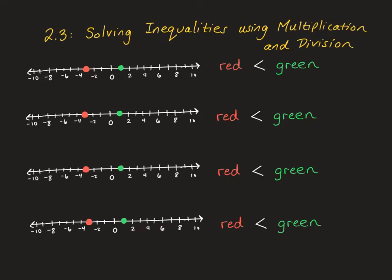On the very first number line, I'm going to add 3 to both sides. Let's see what happens to our red dot. When we add 3, it's going to end up at 0, so it is no longer at negative 3. And our green dot is going to end up at 4, so it's no longer at 1. But the fundamental thing I want to look at is: is red still less than green? And we can see for sure that it definitely is — that's still true.